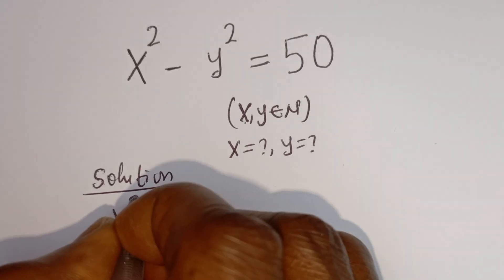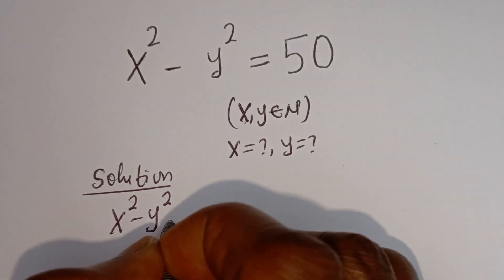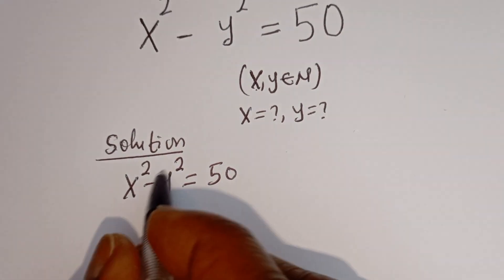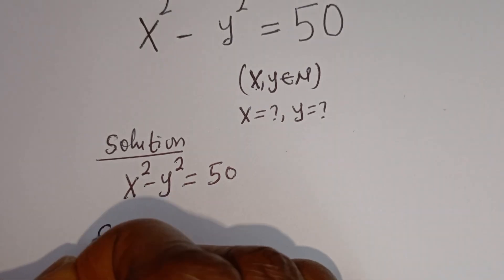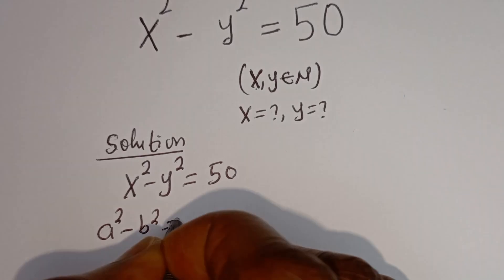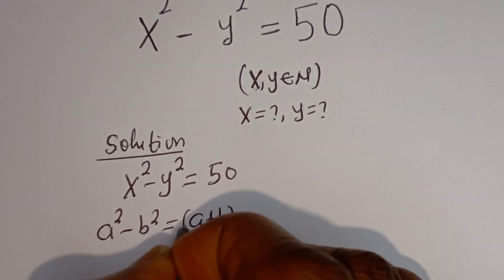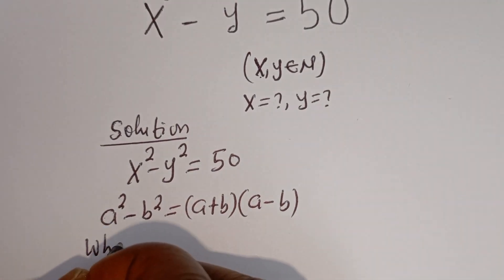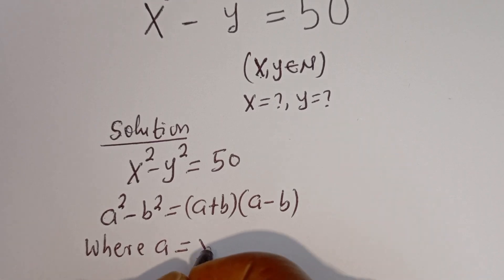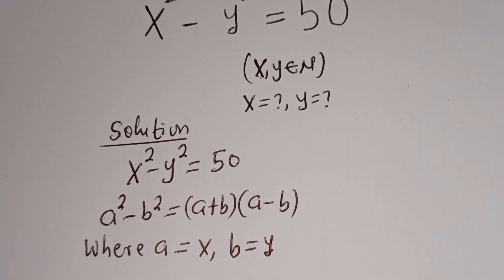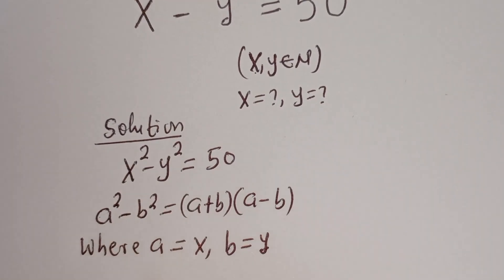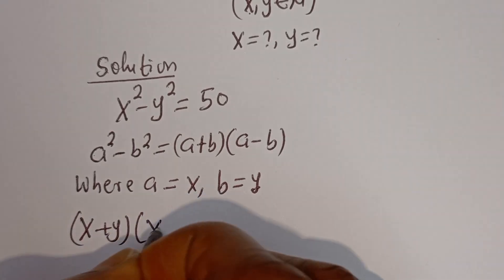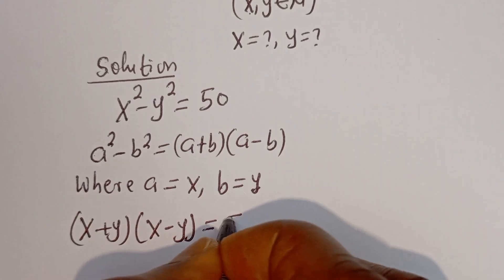We have x squared minus y squared is equal to 50. This is in the form of a difference of squares. Take note that if you have a squared minus b squared, this is equal to (a+b)(a-b). Then we have a is equal to x and b is equal to y. This can be written as (x+y)(x-y) is equal to 50.